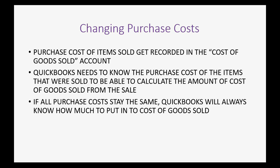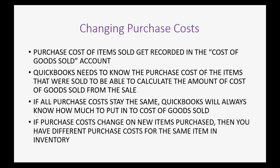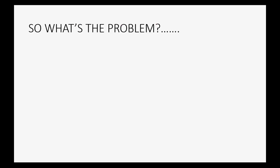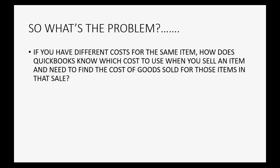Unfortunately, if purchase costs change on new items purchased, then you have different purchase costs for the same item in inventory — and that's the problem. If you have different costs for the same item, the question is: how does QuickBooks know which costs to use when you sell an item and need to find the cost of goods sold?